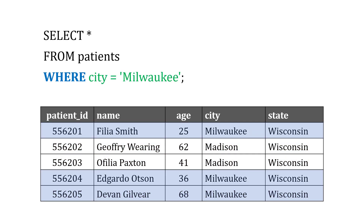I can also not only filter by numbers, but by text as well. So maybe I want WHERE the city is equal to Milwaukee. I put Milwaukee in single quotes because it's a text string. Looks like three patients meet that condition.